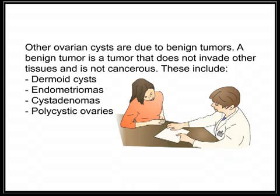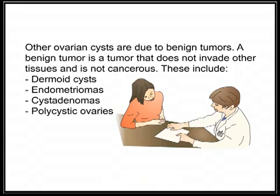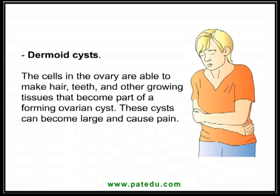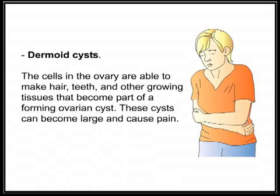Other ovarian cysts are due to benign tumors — a tumor that does not invade other tissues and is not cancerous. These include dermoid cysts, endometriomas, cystadenomas, and polycystic ovaries. The cells in the ovary are able to make hair, teeth, and other growing tissues that become part of a forming ovarian cyst. These cysts can become large and cause pain.